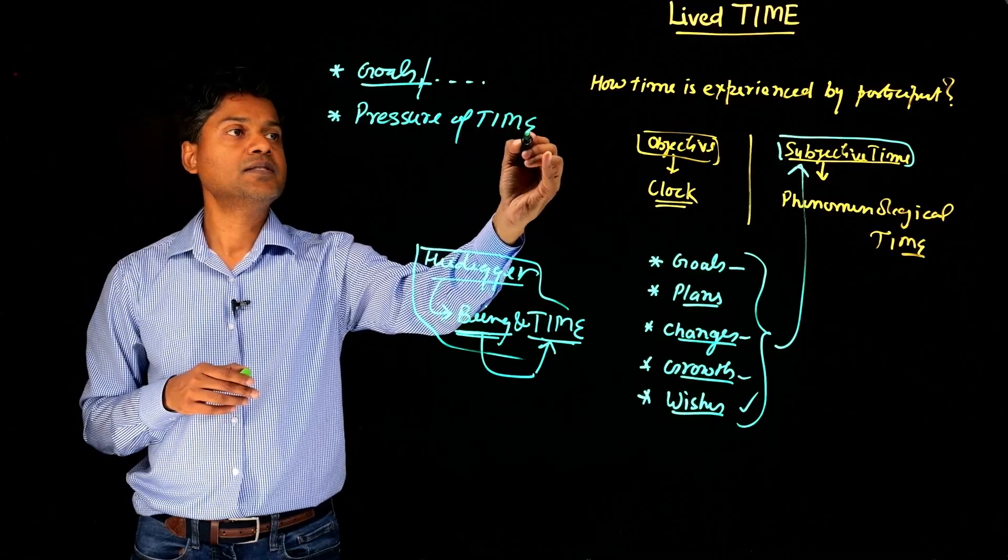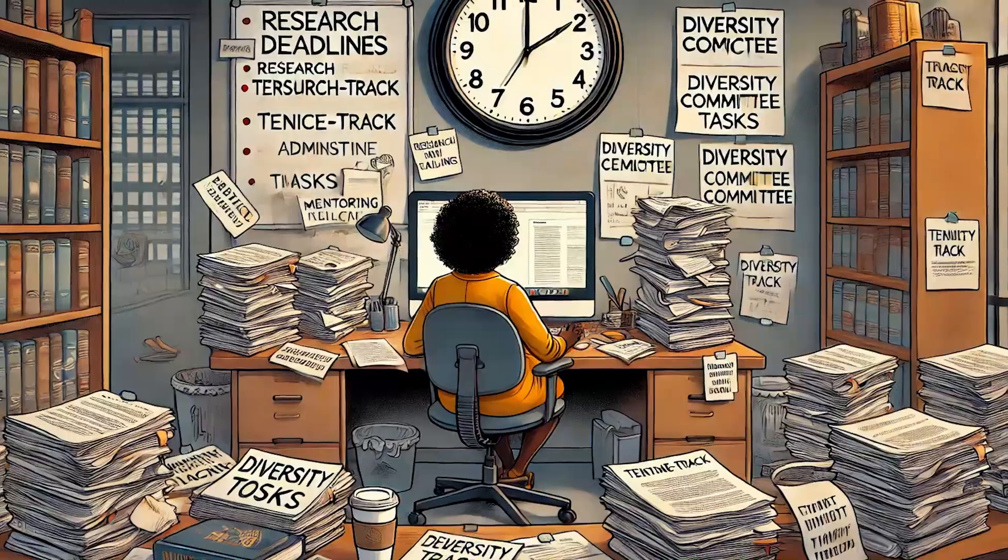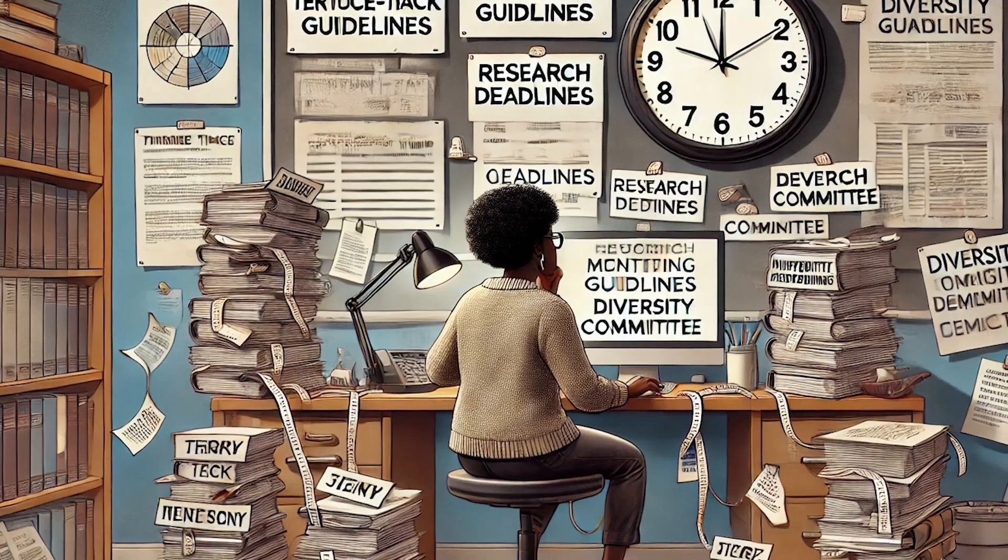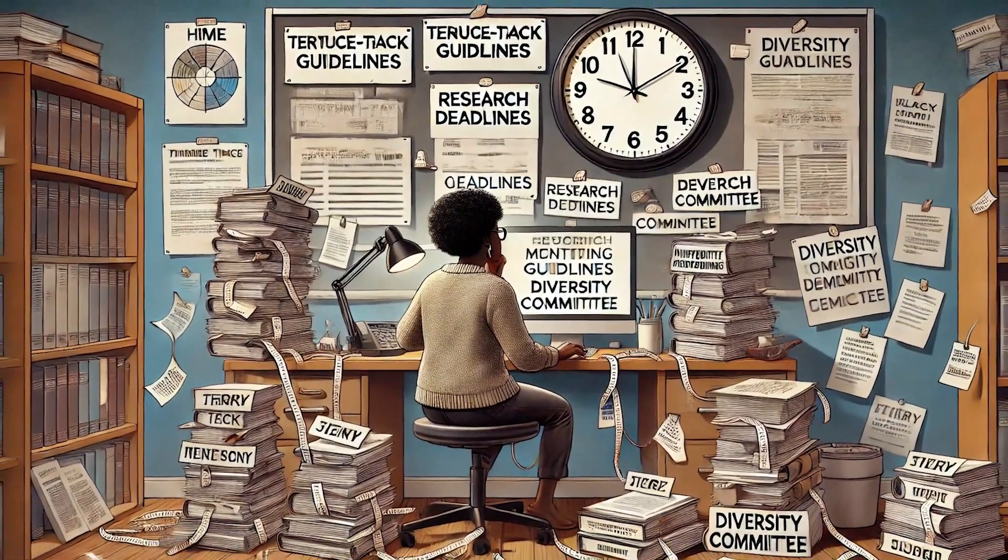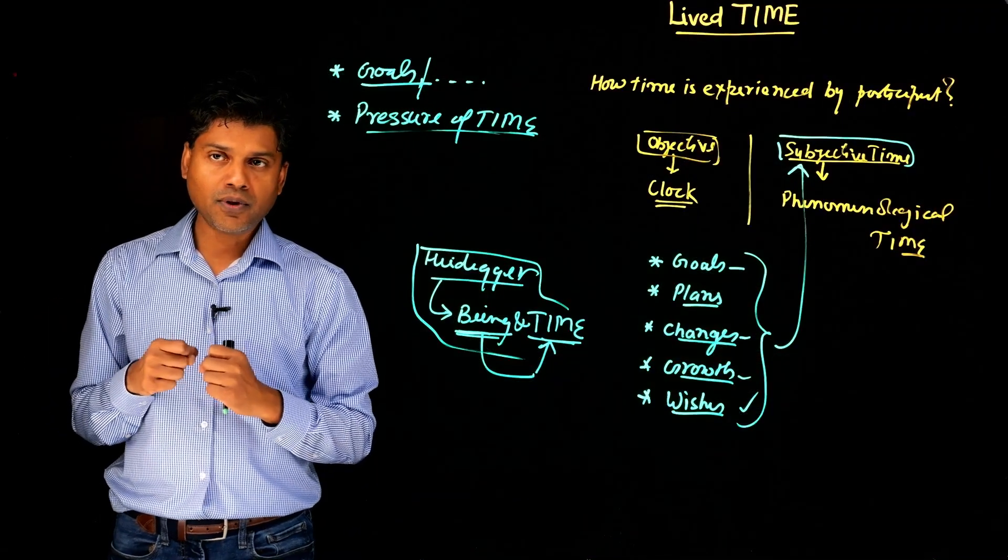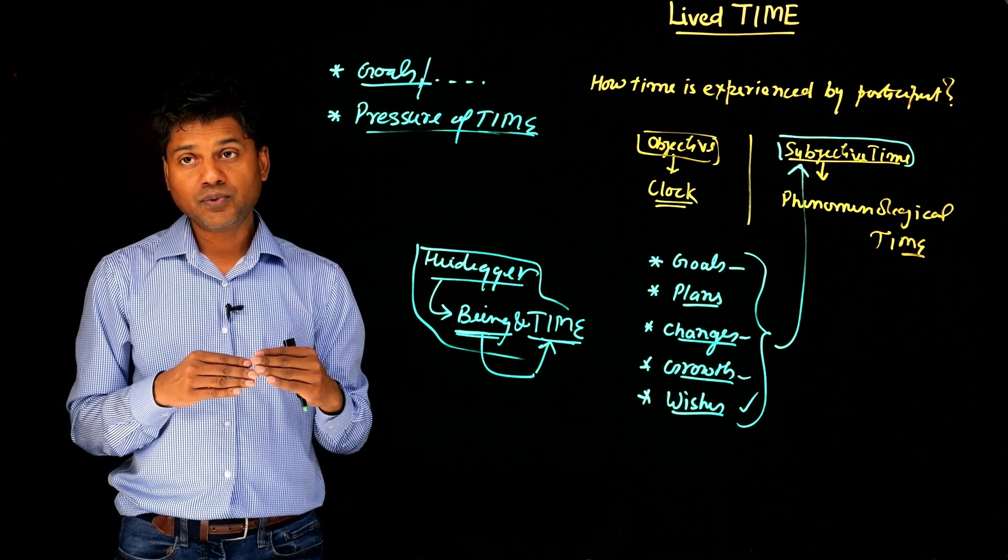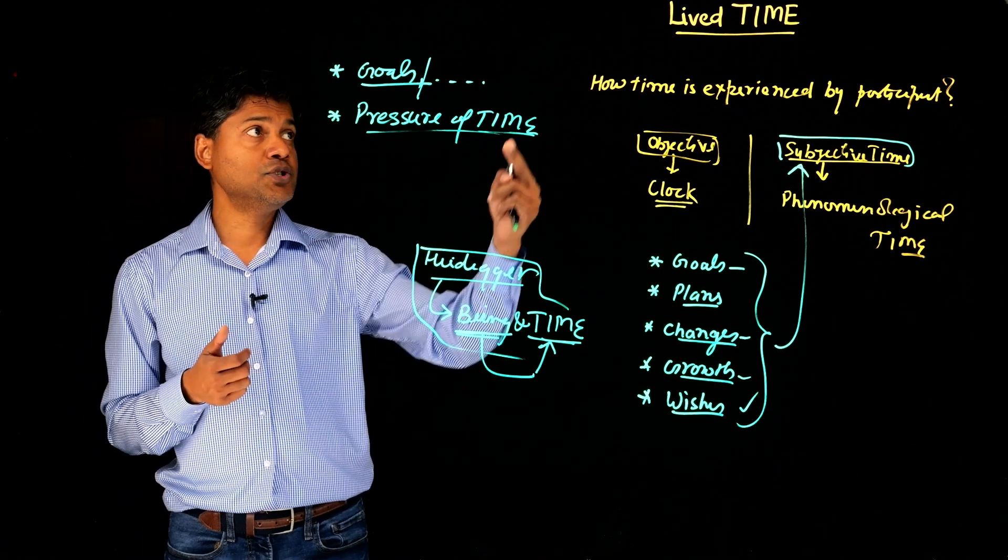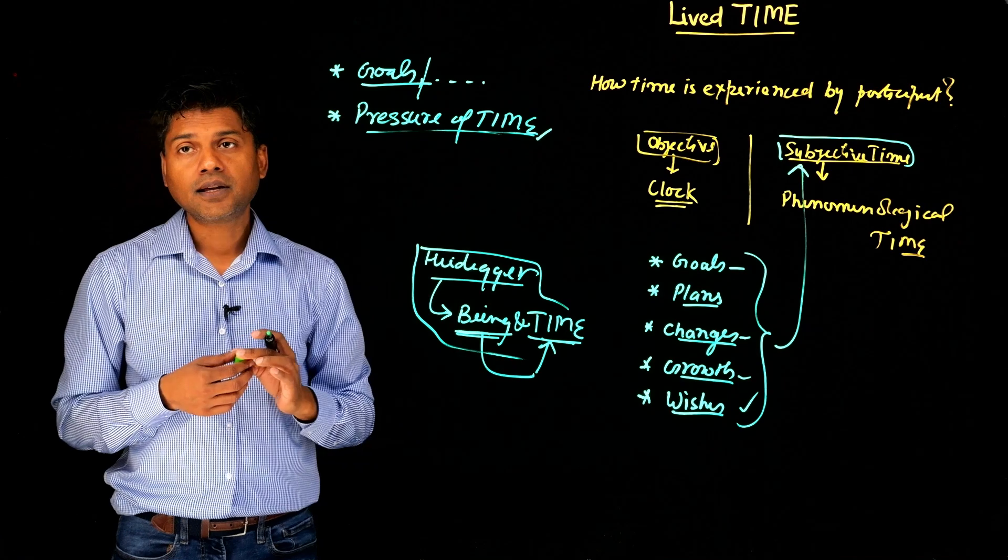They may also talk about the pressure of time. Pressure of time in the sense that in academia, you have to balance your time between teaching, research, and service. Sometimes it's a lot to handle and navigate between these different components. If you are somebody who comes from a marginalized background, you may also want to spend some time for advocacy work as well. So one theme that may emerge related to lived time is pressure of time that they may experience in academia.